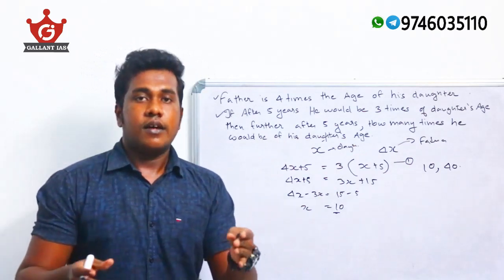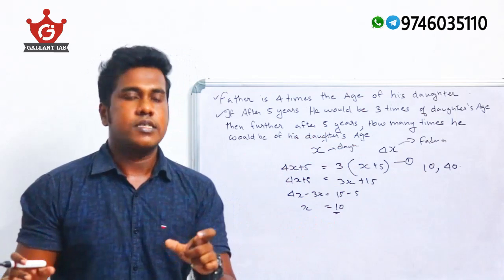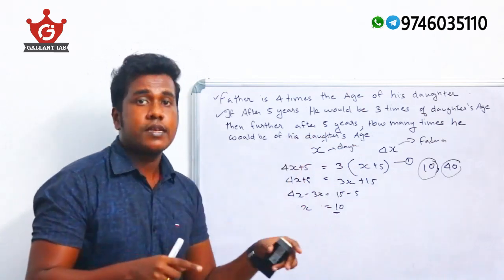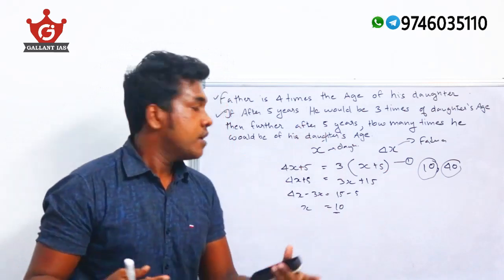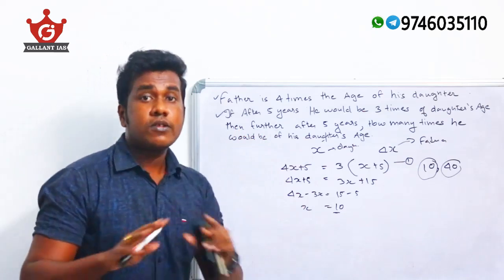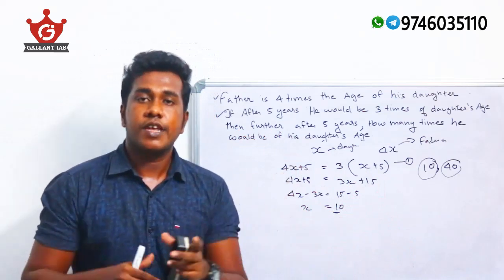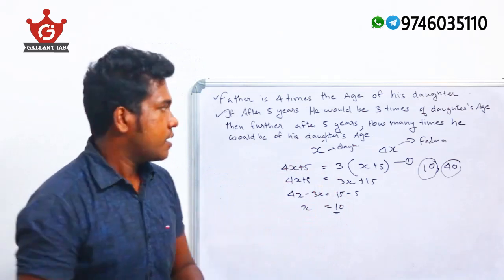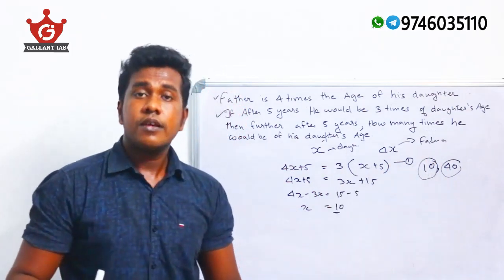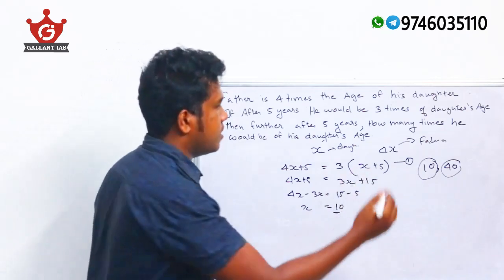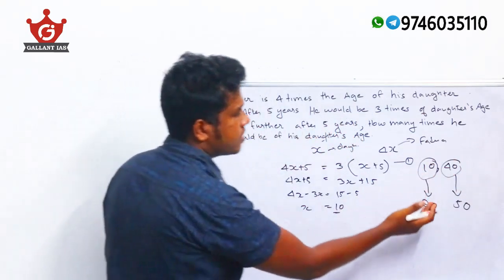From the present age, we need to find the relationship between father and daughter after 10 years. The daughter's present age is 10 and the father's is 40, so after 10 years the daughter's age becomes 20 and the father's age becomes 50.